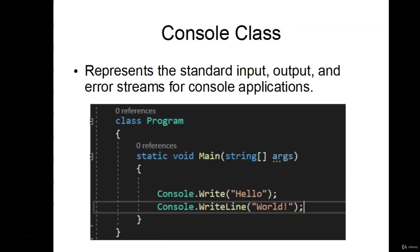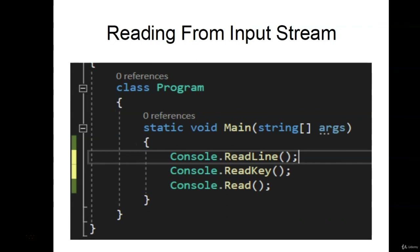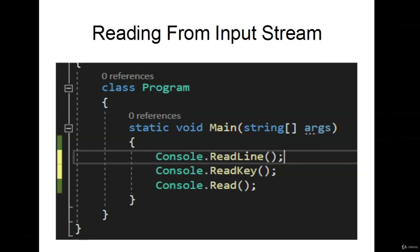Welcome back. In this video, we're going to talk about the console class. The console class represents the standard input, output, and error streams for console applications. We've seen this before — console.Write and console.WriteLine to print something to the console. We've also worked with the reading streams: ReadLine, Read, and we haven't seen ReadKey yet — but these are all ways to read user input. Previously we've used Read and ReadLine just to keep the console up, but now we want to focus on using these methods to get information from the user.